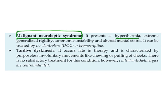Malignant neuroleptic syndrome is the most dangerous extrapyramidal effect. It causes increased temperature, extreme generalized rigidity, autonomic instability, and altered mental status; if untreated, it may cause death. The drug of choice is dantrolene. Bromocriptine — a dopamine agonist — can also be used, since these drugs block dopamine and bromocriptine counteracts that blockade.